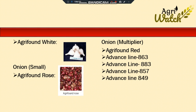The next one is Agri Found White. It is globular in shape, with tight skin and silvery attractive white color. It will mature in 110 to 130 days after transplanting, having good keeping quality. It is suitable for cultivation in late kharif and rabi seasons. It is a good variety for dehydration and is recommended for Maharashtra, Madhya Pradesh, Gujarat and Rajasthan.